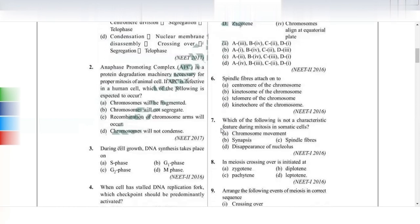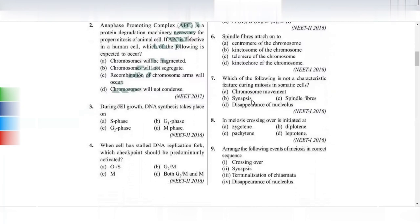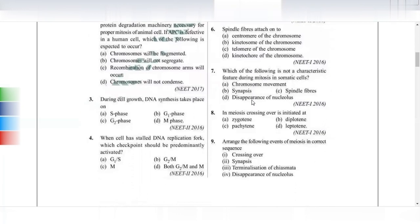How do spindle fibers attach? This is a common question. Spindle fibers attach to the centromere at the kinetochore, which is a proteinaceous extension. The spindle fiber protein (tubulin) attaches to this protein with the help of cohesive forces. Next question: which is not a characteristic feature during mitosis in somatic cells? Option B - Synapsis. Synapsis is part of meiosis, not mitosis.